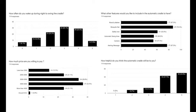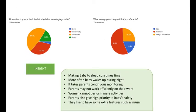The fifth question asked how often parents wake up during the night to swing the cradle — about 32 people woke up three times a night. The sixth question asked what features they would like in an automatic cradle — respondents wanted safety lock, automatic swing timer, camera, alerting messages, music, etc. The seventh question asked how much they were willing to pay — the target audience was willing to pay 3,500 to 4,000 rupees. The eighth question on helpfulness of the automatic cradle showed 50 people gave a rating of 5. The ninth question revealed that 47.4% marked "sometimes" for schedule disturbance. The tenth question showed most people preferred a balanced type of swinging.